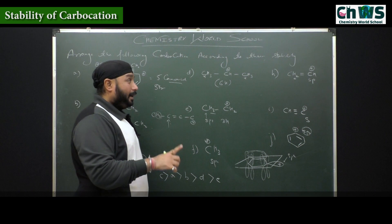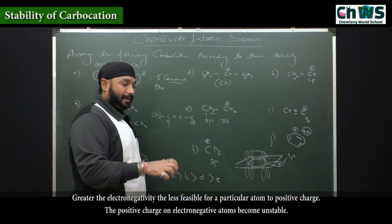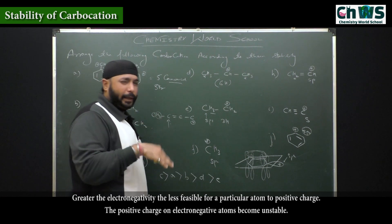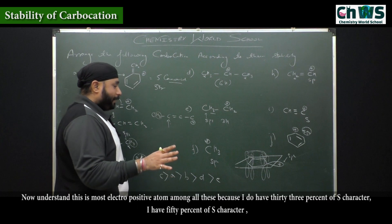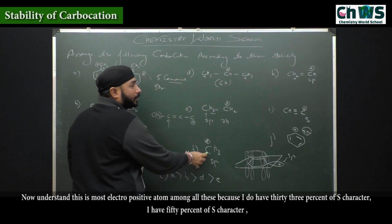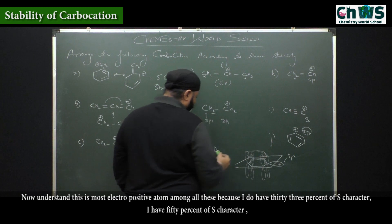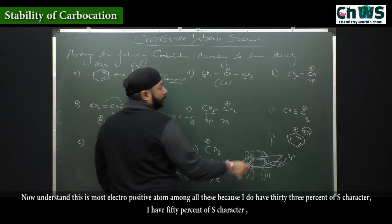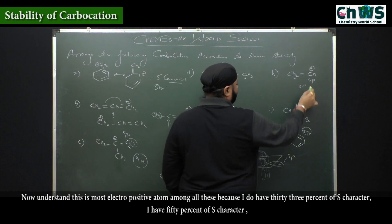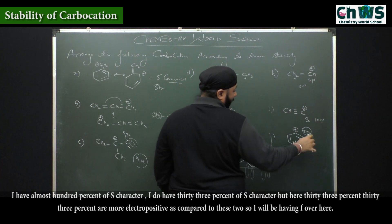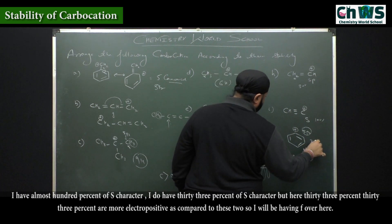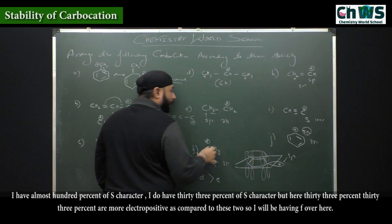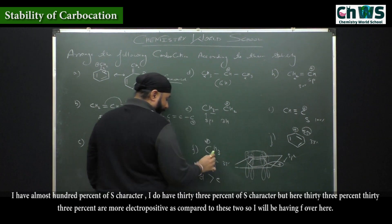Greater electronegativity means it is less feasible for that atom to hold a positive charge — the positive charge on an electronegative atom becomes unstable. Here I have 33% s character (sp2), 50% s character (sp), almost 100% s character (s orbital), and 33% s character (sp2). The sp2 carbocations at 33% are more electropositive than the sp or pure s cases.